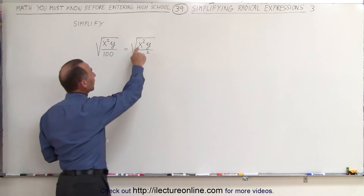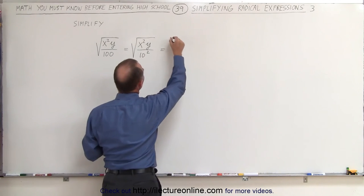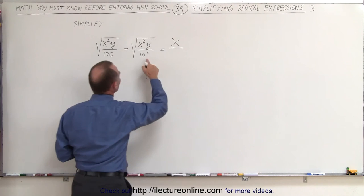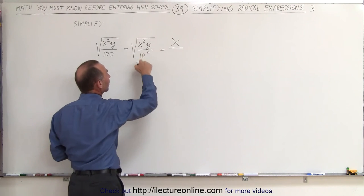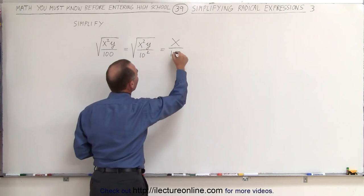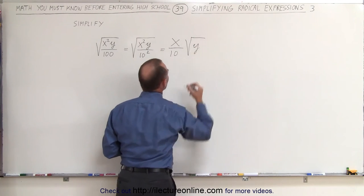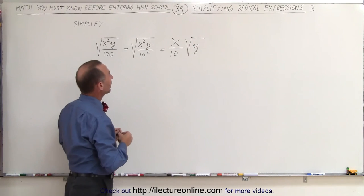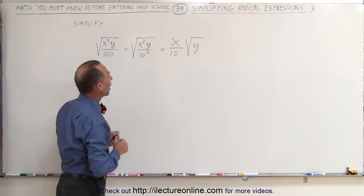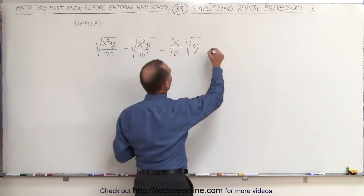So the square root of x² is simply x, so this can be written as x divided by—because the square root of 10² is also 10—and then the only thing we cannot take out of the radical sign is y. So this becomes x over 10 times the square root of y. And if you don't like the radical symbol, you could say